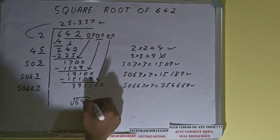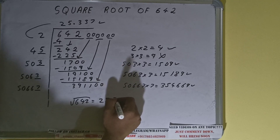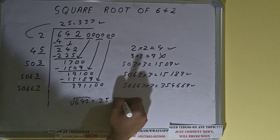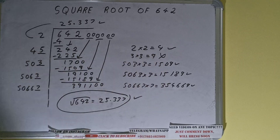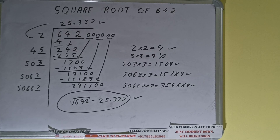So the square root of 642 will be 25.337, and that would be the answer. This is all — if you found the video helpful please click the like button, do consider subscribing, and thanks for watching.